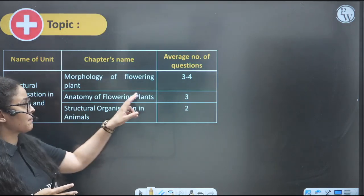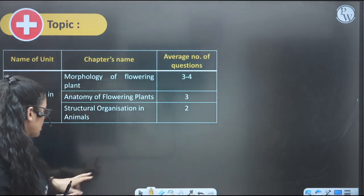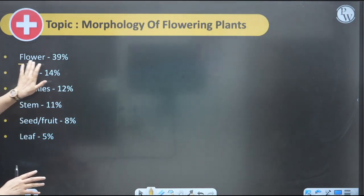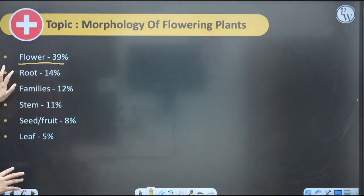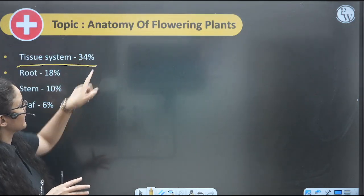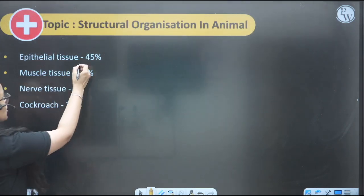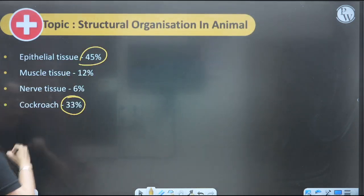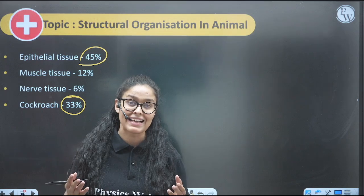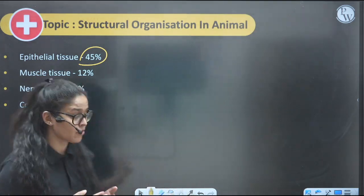For Morphology of Flowering Plants, you can expect 3–4 questions; Anatomy, 3 questions; and Structural Organization, 2–3 questions. The most weightage topic is the flower, with maximum questions from the flower and the root. In Anatomy, the tissue system is very important, and root is also key. For Structural Organization, maximum questions come from epithelium and the cockroach — you cannot leave these topics.